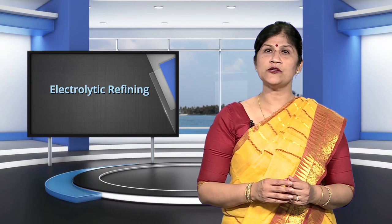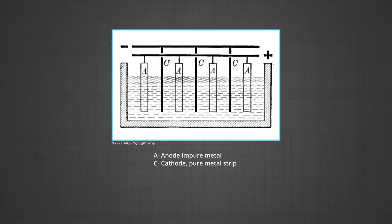Next process is electrolytic refining. In this method, the impure metal is made to act as the anode. A strip of the same metal in pure form is used as cathode. They are put in a suitable electrolyte bath containing a soluble salt of the same metal.